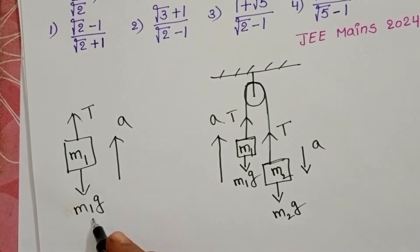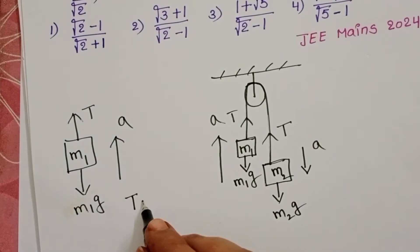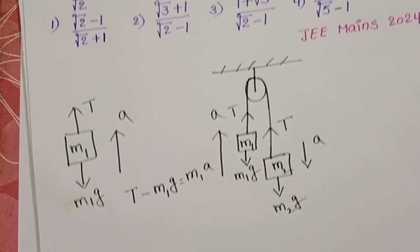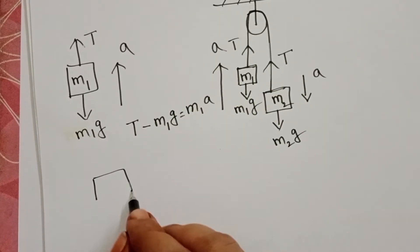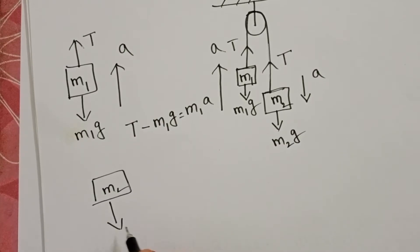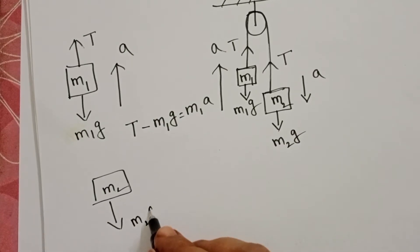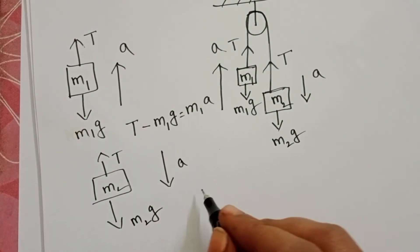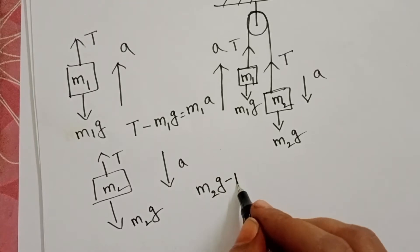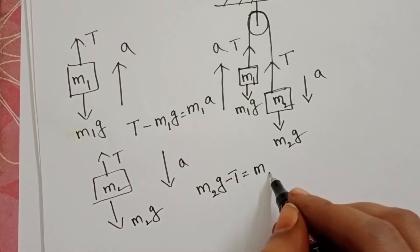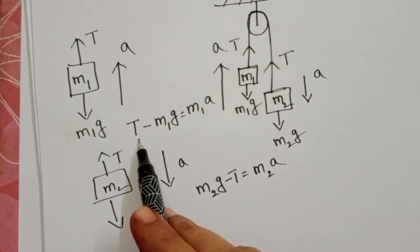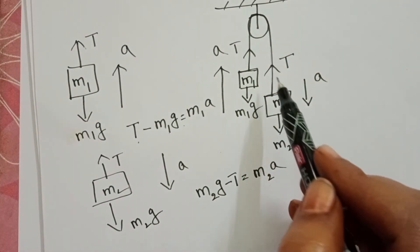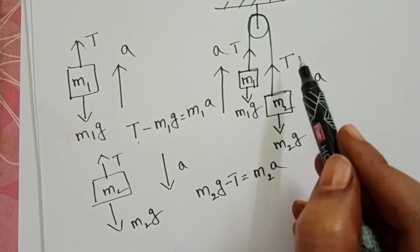Since M1 is lighter, tension is greater than its weight. For block M1: T minus M1g equals M1a. For block M2, weight is greater than tension, so resultant acceleration is downward: M2g minus T equals M2a. Since the string is the same on both sides, the tension is the same throughout. From the M1 equation, T equals M1g plus M1a.